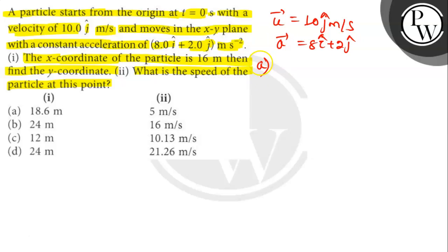Let's find out option i. The position of the particle at any instant is given by s vector equals u vector into t plus 1 by 2 a t squared.